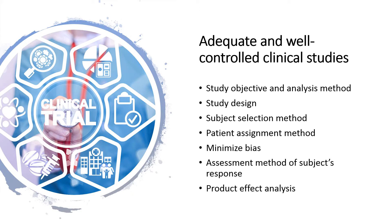Patient assignment method should use a method to assign patients to treatment and control groups that minimizes bias and assures group comparability regarding pertinent variables such as age, sex, severity of disease, duration of disease, and use of therapy other than the investigational product. Assignment is normally by randomization with or without stratification. In a concurrently controlled clinical study, adequate measures — for example, blinding — should be taken to minimize bias on the part of subjects, observers, and data analysts.